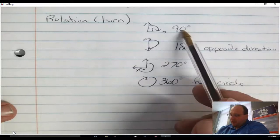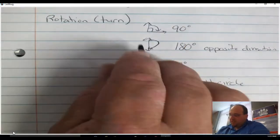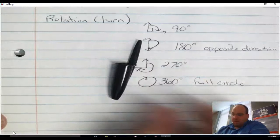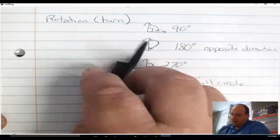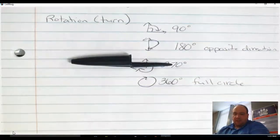So there's 90 degrees, 180, 270, and 360. Let me demonstrate. If I take my pen cap here and I turn it like this, that's a 90-degree rotation.